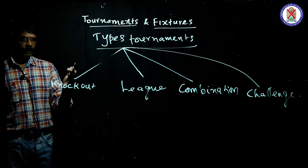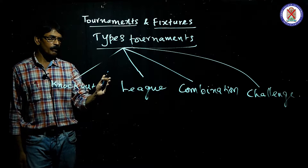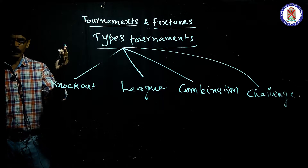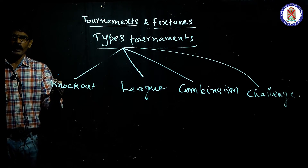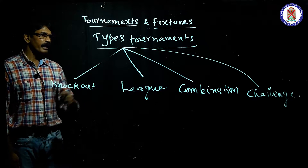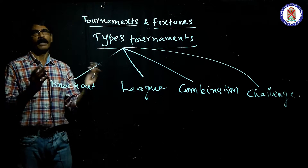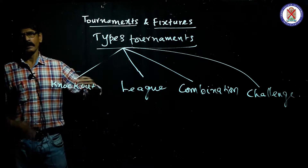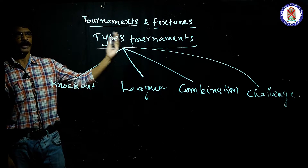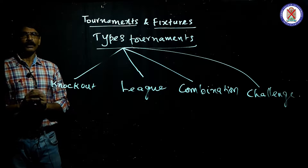To recap, there are four major types of tournaments. One is knockout tournament — lose anywhere and you're eliminated. Two is league tournament — you have repeated chances to play. Three is combination type, combining knockout and league. Four is challenge tournament — players challenge each other and improve their ranking. These are the basic types of tournament.